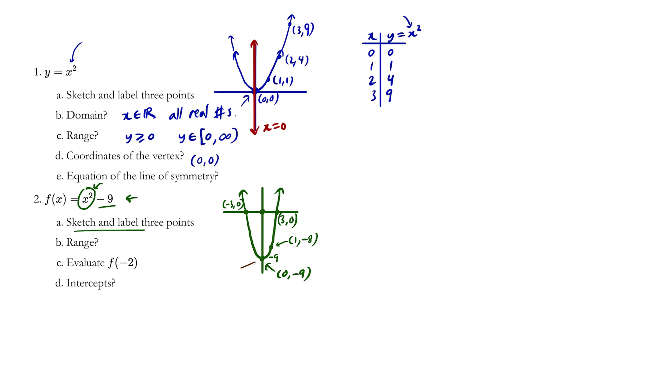And so the range we can see visually is greater than or equals to this endpoint here. So y is greater than or equals to negative 9, including that endpoint. Whenever there's a curve, we include that as an endpoint.